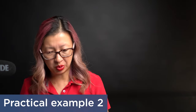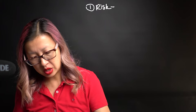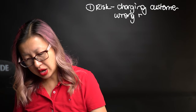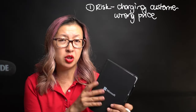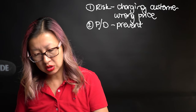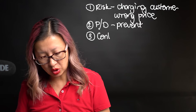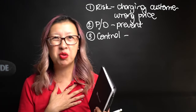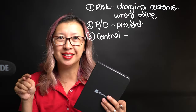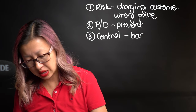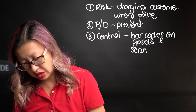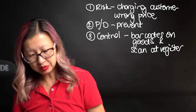Let's do another example. My next example is still going to go back to my notebooks, but the risk this time is going to be charging the customer the wrong price, which will result in inaccurate sales — that's affecting our accuracy assertion. In terms of prevention or detection, I want to try and prevent. I can remember the days when you went to the supermarket and there were no barcodes — a little sticker was manually added to the product, then you typed it into the cash register. So we could use barcode scanning: barcodes on goods, scanned at the register. That's going to be my control.